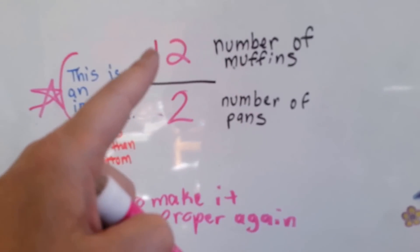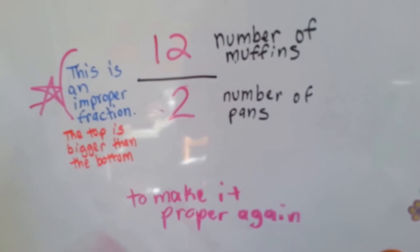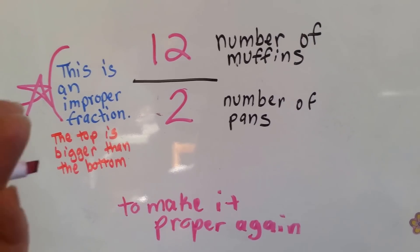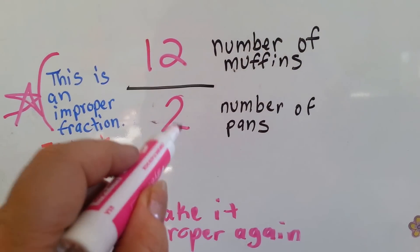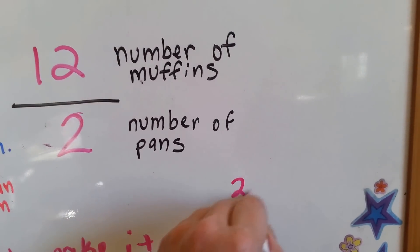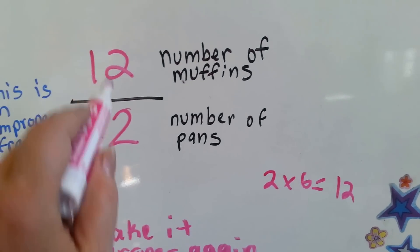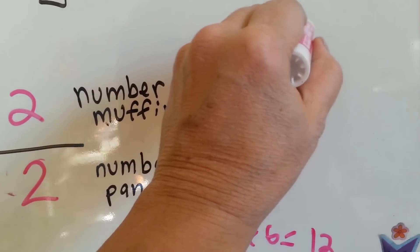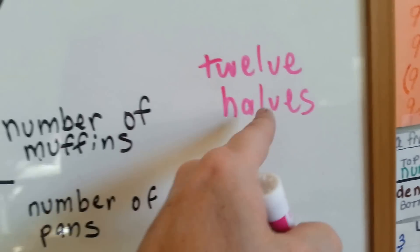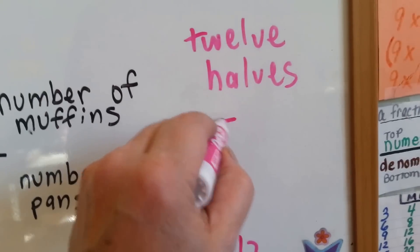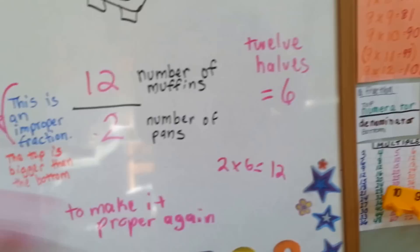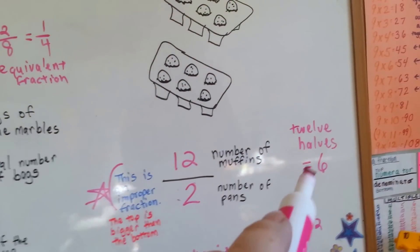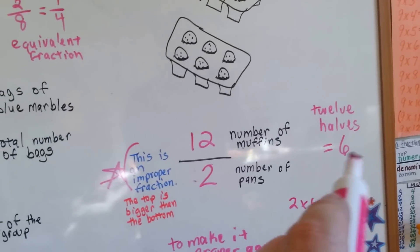When the top is bigger than the bottom, it's improper. That means it's not right. It's messed up, sort of. So in order to make it proper again, to make it the way a fraction should look where the top is little and the bottom is bigger, we need to say how many times can two fit into twelve. Two times what is twelve? Two times six is twelve. So there's six of them in here. So, twelve halves, which is how you would read this, twelve halves is equal to six. No fraction at all. Well, we turned it into a whole number. Its fraction is twelve halves, but twelve halves equivalent is six, and now it's not an improper fraction anymore.